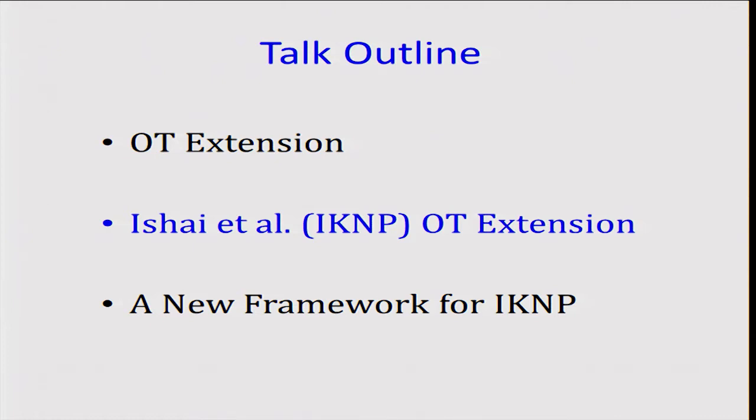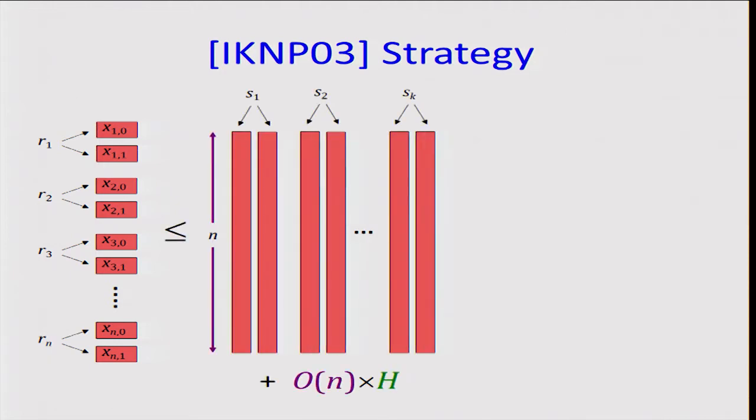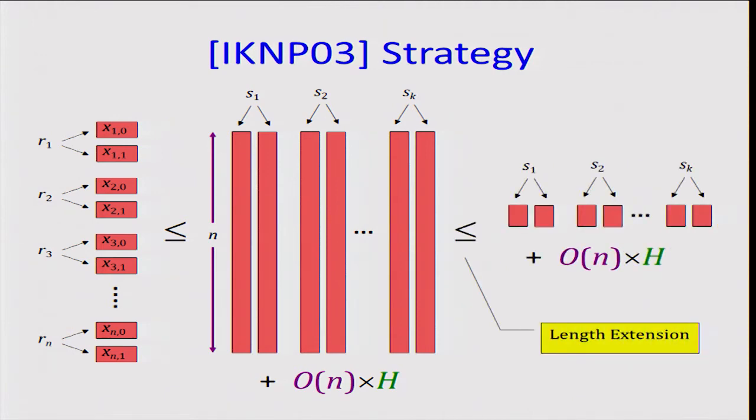In the next part of the talk, we'll describe Ishai et al's construction of OT extension. In fact, we'll use Ishai's slides from Crypto 2003 to do this. The first and the main step of IKNP is to do a reduction from N OTs to K OTs but on N-bit strings. This will also incur an additional linear number of symmetric key operations. Then the next step is the length extension case, which we already saw before. This allows us to reduce OT on long strings to OTs on short strings and will incur another additional cost of linear number of symmetric key operations.